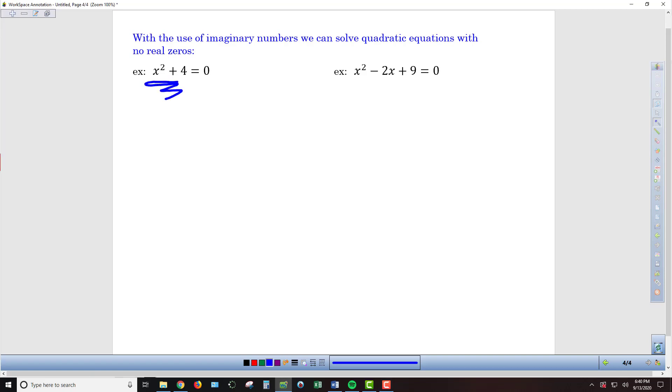If we take the first example here, we have x² + 4 = 0. Hopefully we're not baited into the idea that we can factor this expression. There's no way to factor a sum of squares.